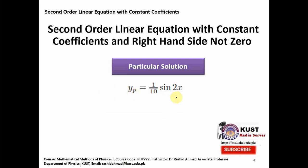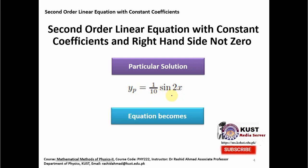Now, in addition to the complementary function, let us say we know one particular solution, which we call yp. I will show in detail later how we can find a particular solution. For now, just assume we know it somehow, and this particular solution is yp = (1/10)sin(2x), which solves this equation. So the equation D² + 5D + 4 acting on yp equals cos(2x), since yp is already a particular solution.